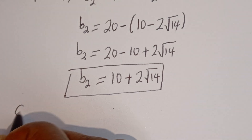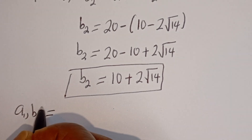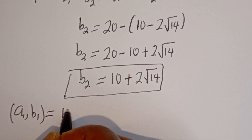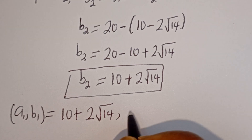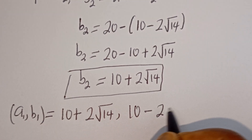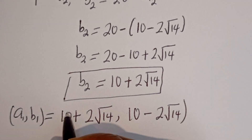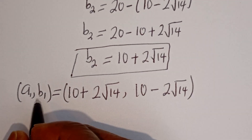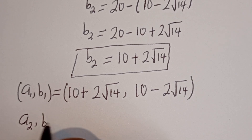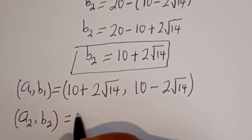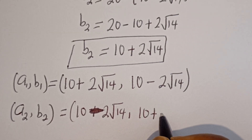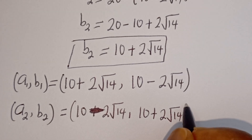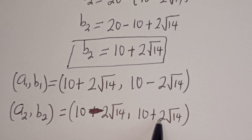Therefore, the solution pairs are: a1, b1 equals (10 plus 2 root 14, 10 minus 2 root 14), and a2, b2 equals (10 minus 2 root 14, 10 plus 2 root 14). You can see that a1 equals b2, and b1 equals a2.